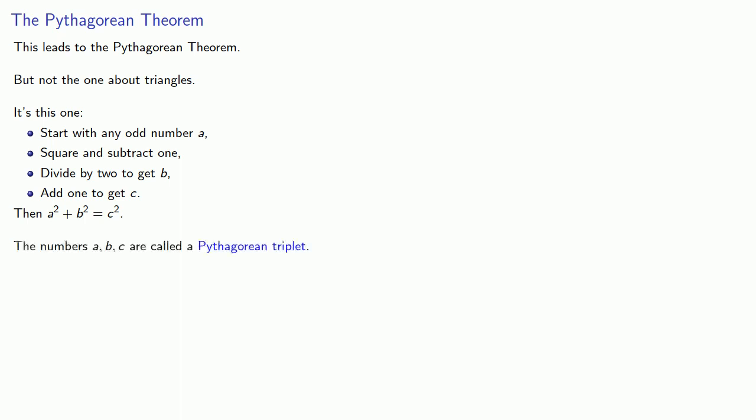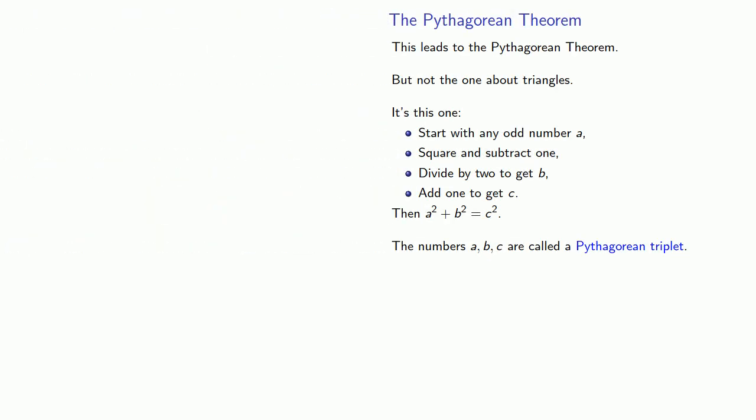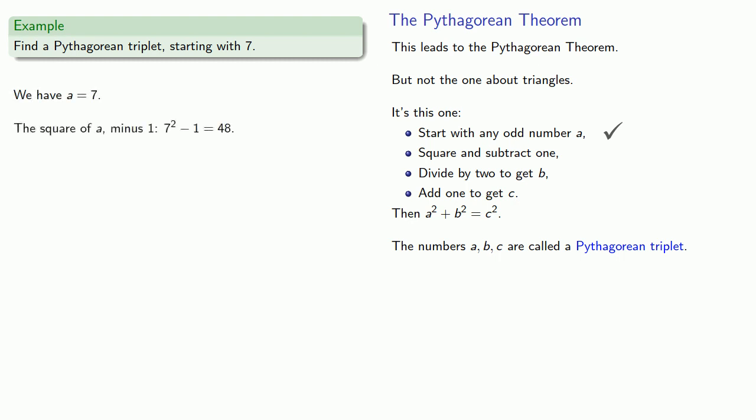The numbers a, b, and c are what are called a Pythagorean triplet. For example, we might find a Pythagorean triplet starting with seven. So we've started with an odd number. Check. We square and subtract one. That's seven squared minus one gives us 48. We take half of the number. That's 24, and that's b. And then we take one more. That gives us 25. And 7 squared plus 24 squared is in fact 25 squared. And 7, 24, 25 form a Pythagorean triplet.